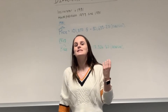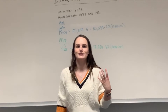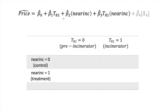Neither of those regressions tells us the true effect the incinerator has had on house prices. So we need to use a difference-in-differences model. The model takes into account the time period before the incinerator existed, because we found that even before it was built, living in that area had a negative effect on house prices compared to other areas.